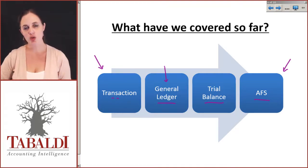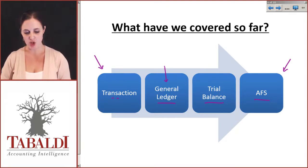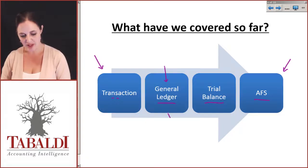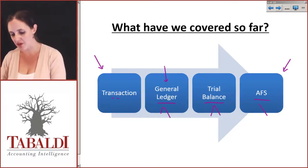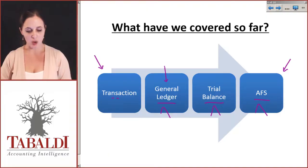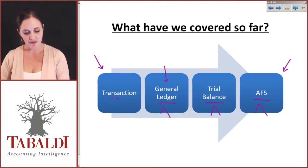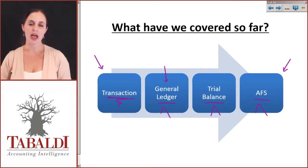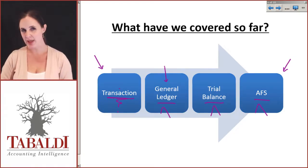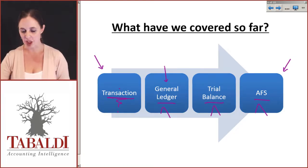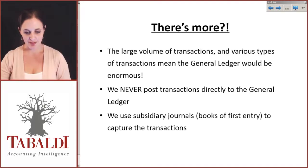So our financial reporting process so far has dealt with the general ledger, the trial balance, and the financial statements. What we need to do now is figure out how to make it a lot simpler and more efficient to get from the transaction to the general ledger. That's what we're going to look at in Study Unit 5.